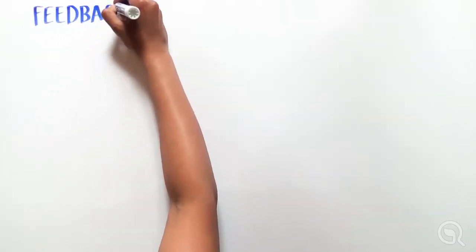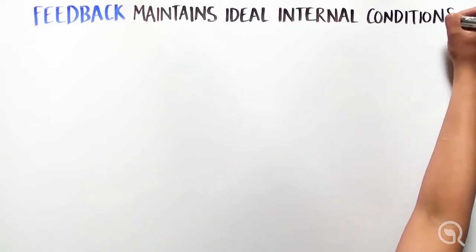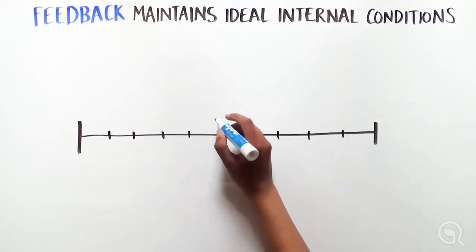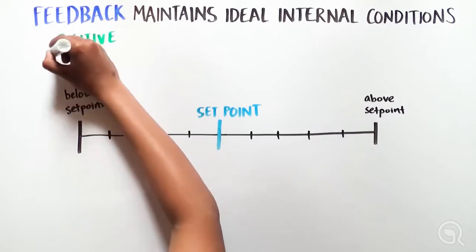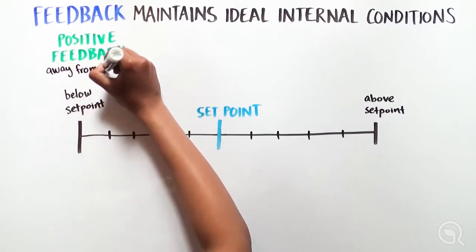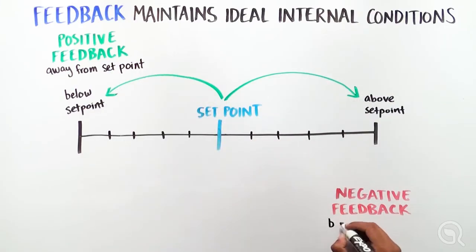Our biological systems use processes known as feedback to help maintain ideal internal conditions. There are two main types: positive feedback and negative feedback. Positive feedback moves biological systems away from the set point, and negative feedback brings them back to it.